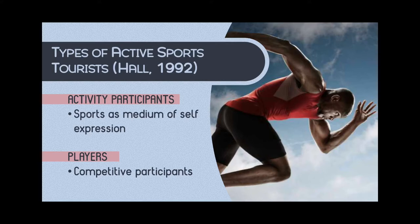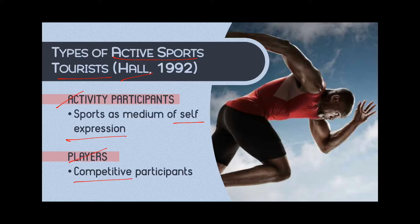The next categorization is by Hall, and this is specific to active sports tourists — those tourists who are actually engaged in the sport when they go to the sports attraction. According to them, there are two types of active sports tourists. The first is activity participants, who engage in the sport for self-expression — just for physical well-being. And there are players who join the sports event because they are competitive participants. For example, marathoners are players, and those who would go to ice skating just to experience it are activity participants.